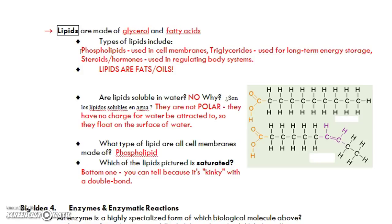Triglycerides, we use those for long-term energy storage. This is the typical fat, like body fat that you might think, or fat that's on meat products. And then another type is steroids or hormones, like cholesterol, testosterone, estrogen. All of those are actually lipids. And they regulate our body systems, help us through puberty, and all that great stuff.